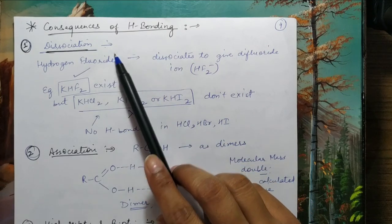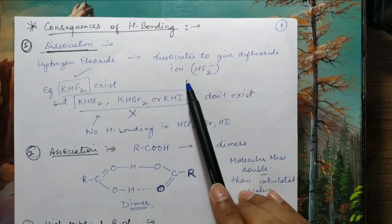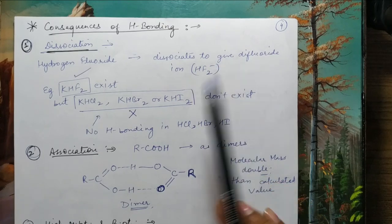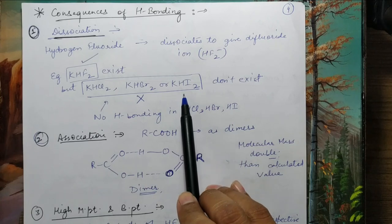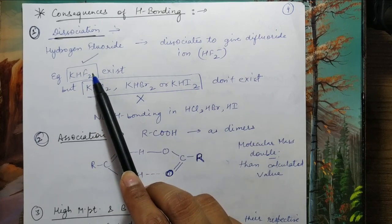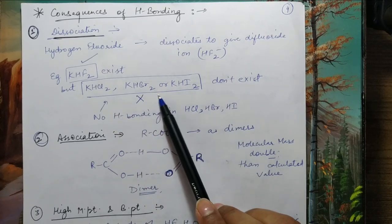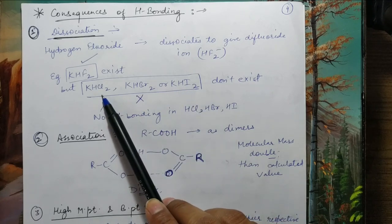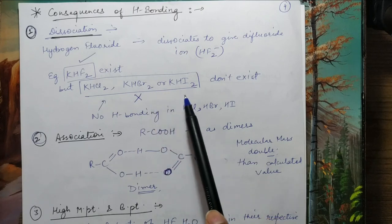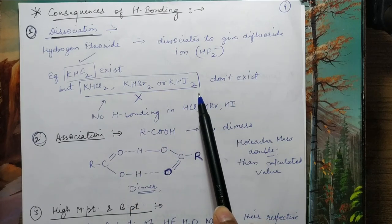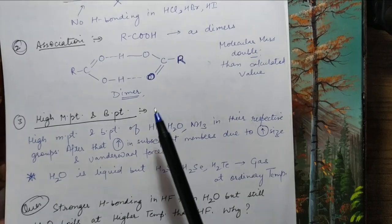Next come the consequences of hydrogen bonding. The first is dissociation. When hydrogen fluoride dissociates, students normally think it gives H⁺ and F⁻, but actually it gives the difluoride ion, HF₂⁻. This shows that KHF₂ exists. A common question is: why does KHF₂ exist but KHCl₂, KHBr₂, and KHI₂ do not? The reason is that HF₂⁻ anion exists due to hydrogen bonding, allowing KHF₂ to exist. But HCl, HBr, and HI have no hydrogen bonding, so HCl₂⁻, HBr₂⁻, and HI₂⁻ ions are not formed, and hence those compounds do not exist.